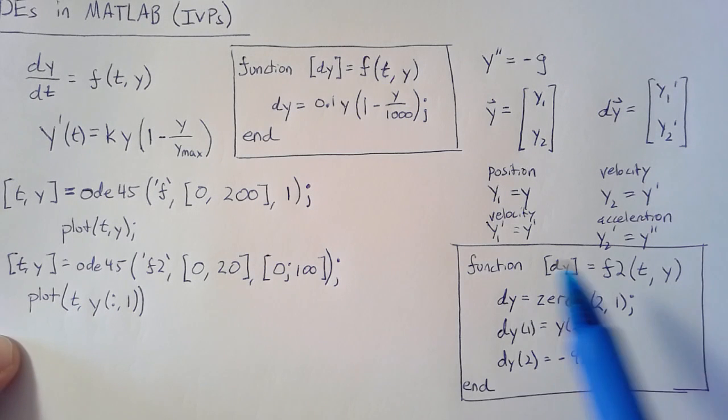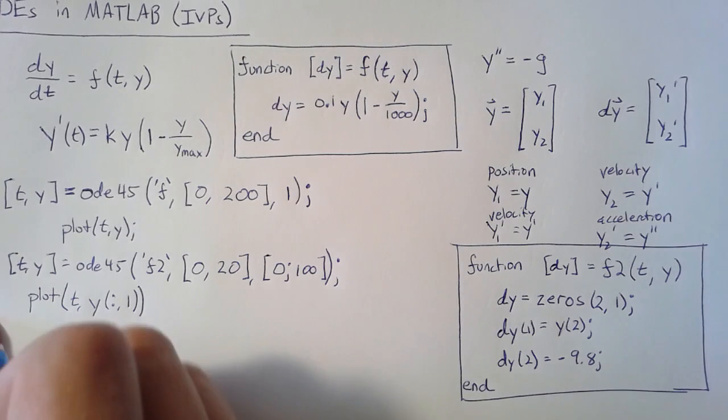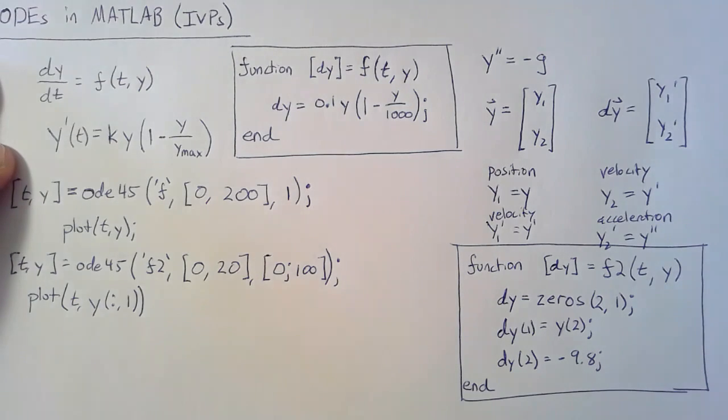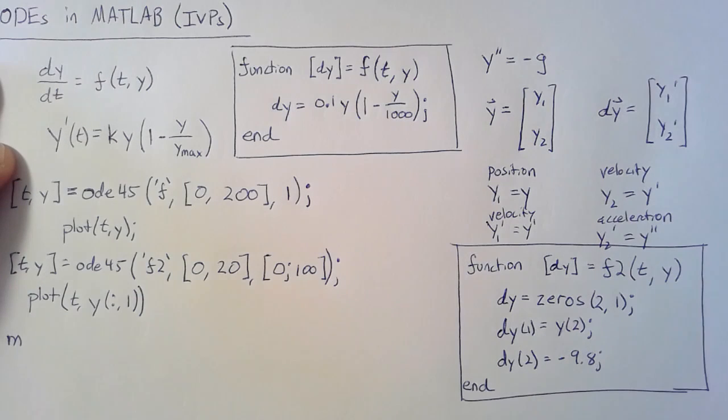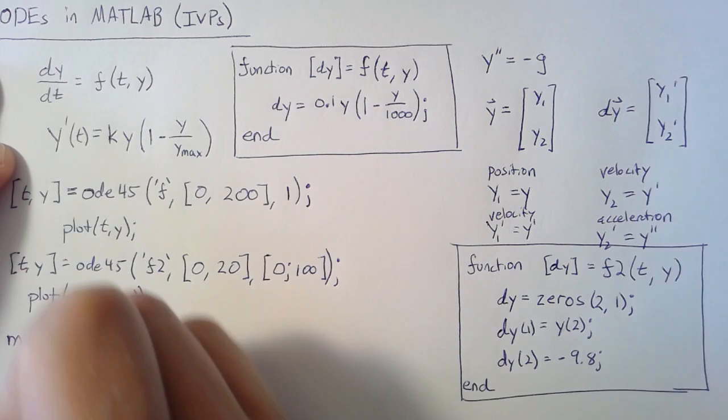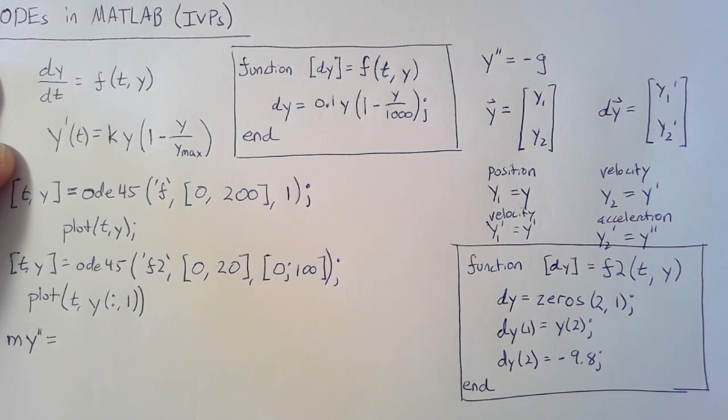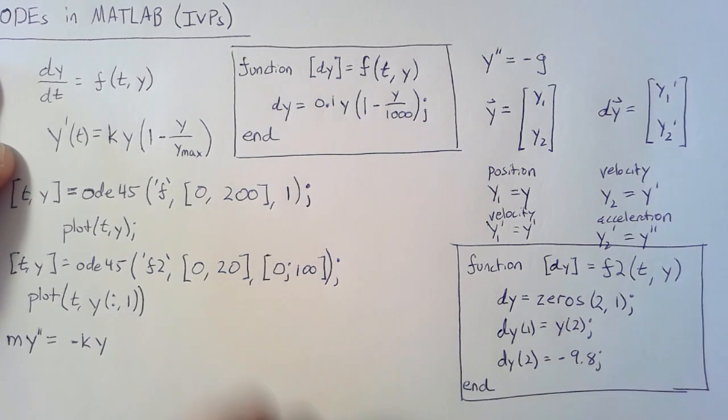Okay, so that is a little bit of population dynamics and a little bit of ballistics. Let's do something a little more interesting. What we'll do now is a linear oscillator.